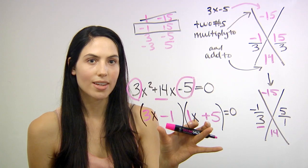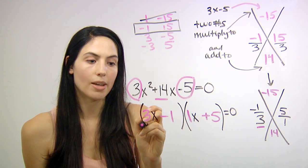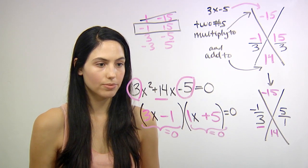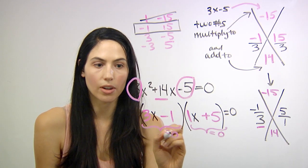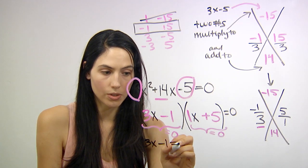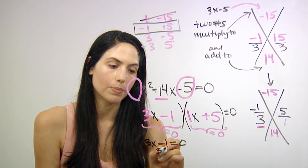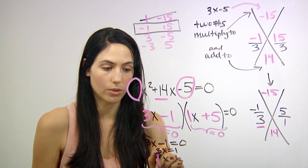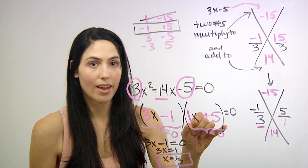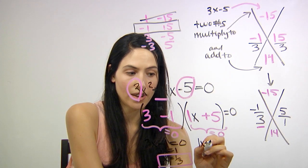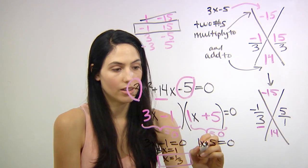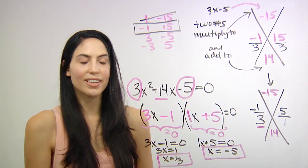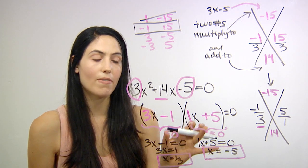You have a factored quadratic equation and you're ready to solve. Take each factor and separately set them equal to 0. Pull out 3x minus 1 equals 0 — solving gives 3x equals 1, so x equals 1 third. That's one solution. For the other factor, 1x plus 5 equals 0 — solving gives x equals negative 5. That's your other solution. So your two solutions are 1 third and negative 5, found by factoring your quadratic equation.